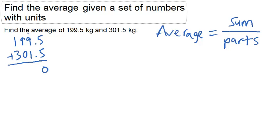So 5 plus 5 is 10, carry the 1. 1 plus 9 plus 1 is 11. 1 plus 9 is 10, carry the 1. 1 plus 1 plus 3 is 5. So the sum of 199.5 and 301.5 is 501.